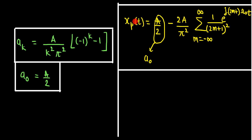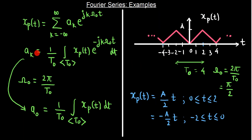This means the original periodic signal is now represented as a linear combination of harmonically related complex exponentials. We have calculated the a_k coefficients and simply substituted them into the synthesis equation here.